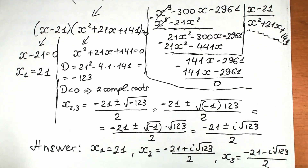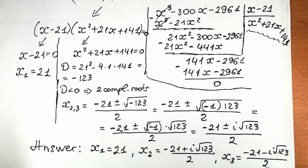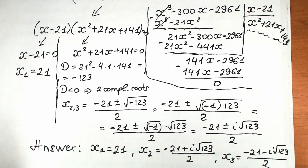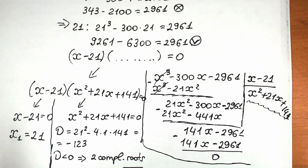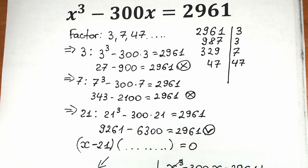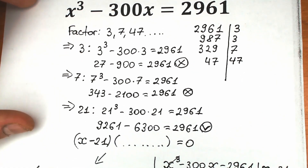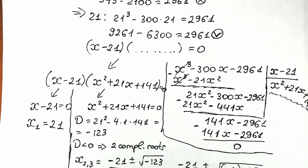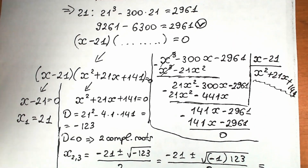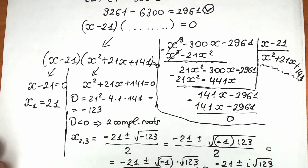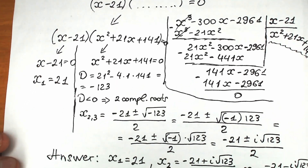This is my solution to this challenge. I hope you understand this explanation. Write your questions down in the comment section. This is my approach using factors to find a root, then polynomial division to find the other parenthesis.